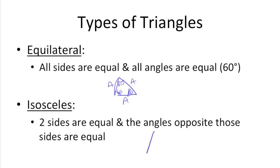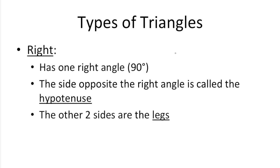Isosceles triangles are triangles with two sides that are the same length. And because of that, the angles opposite those have to be the same as well. Right triangles have one right angle. So they're usually depicted like this, with the right angle symbol here in the corner. The side opposite the right angle is always called the hypotenuse. That would be this side right here. The other two sides, here and here, these are the legs.